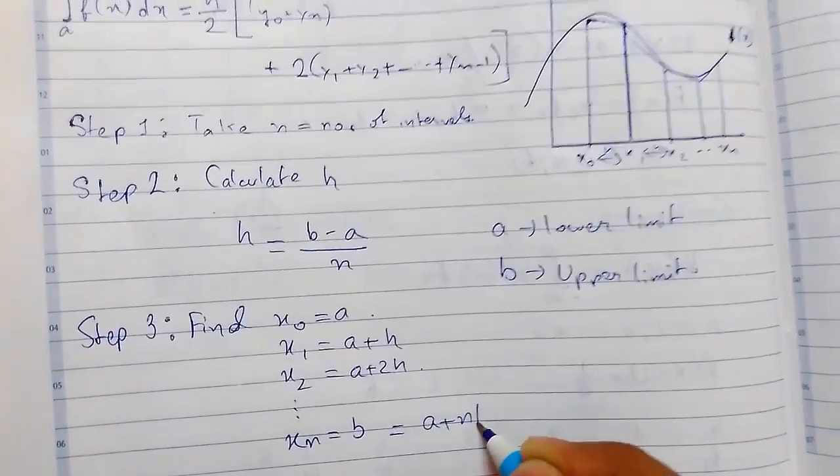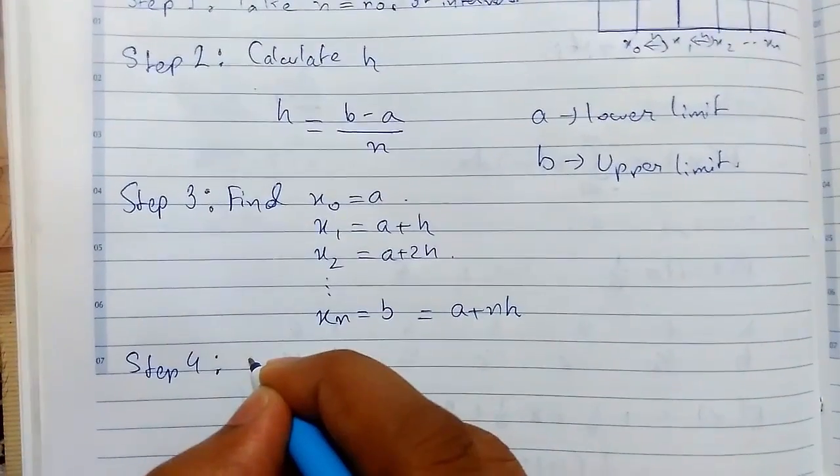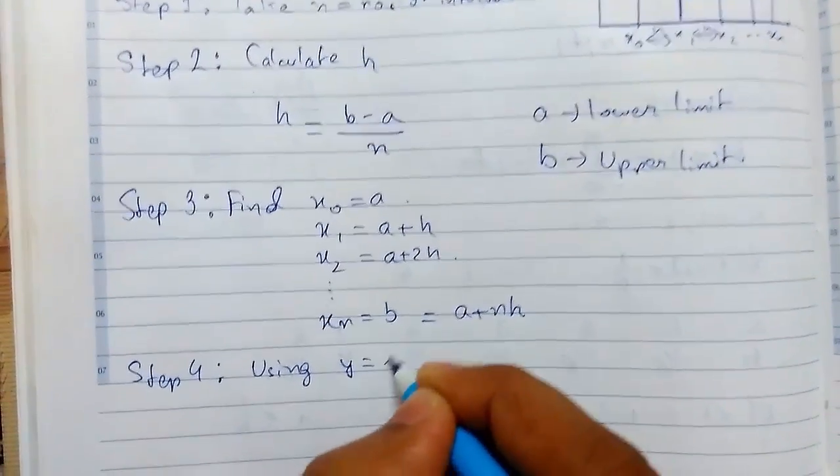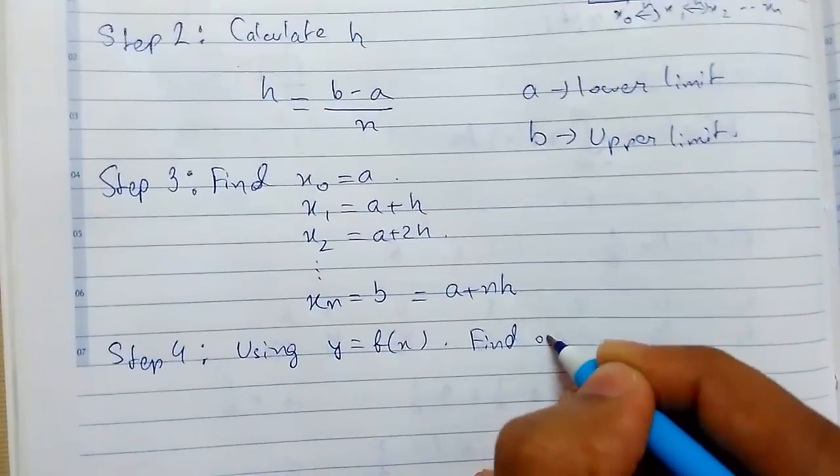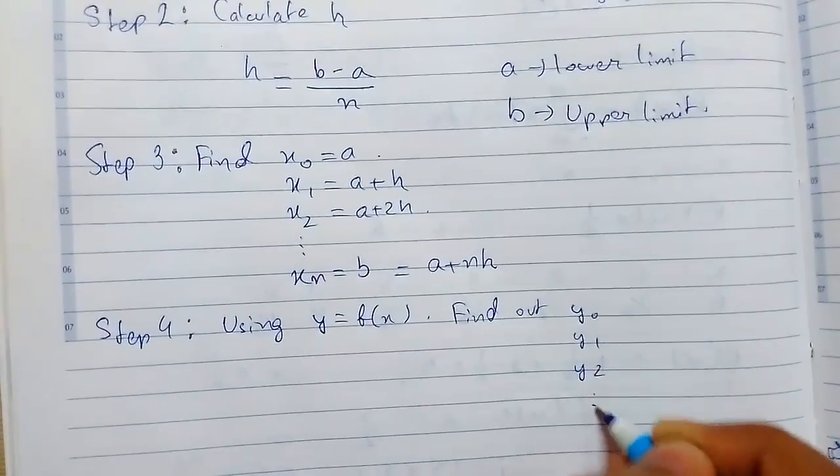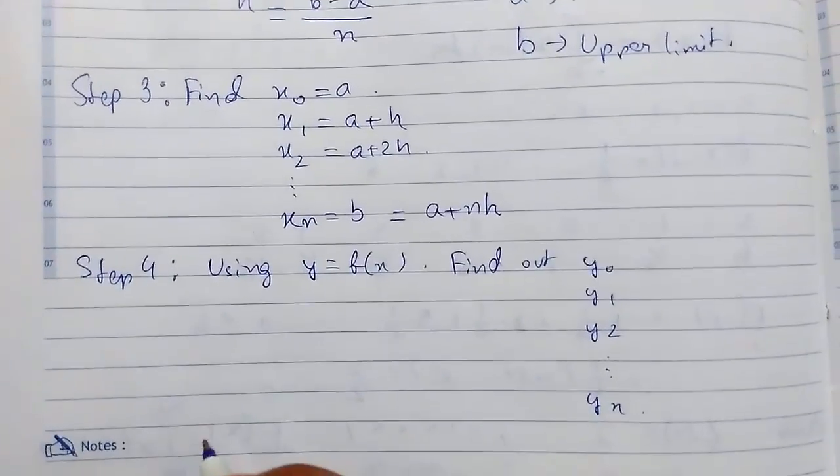Step 4 - Find the values. Using y = f(x), you need to find the values of y0, y1, y2, up to yn. Finally, you will use this formula, which is sometimes written as: